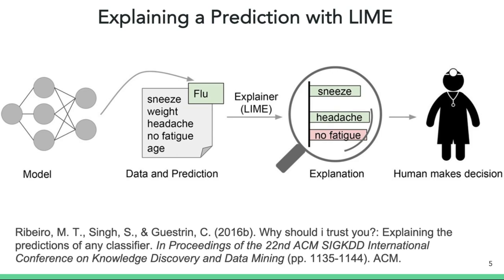The LIME explainer identifies the features supporting the flu prediction for this patient, including the presence of sneeze and headache. While the absence of fatigue symptoms contradicts the prediction of flu, however, the influence of the supporting features is greater and hence the prediction is this patient has the flu.